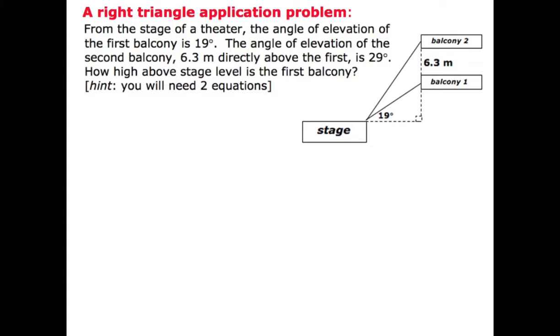The angle of elevation to the second balcony, which is 6.3 meters directly above the first, is 29 degrees.